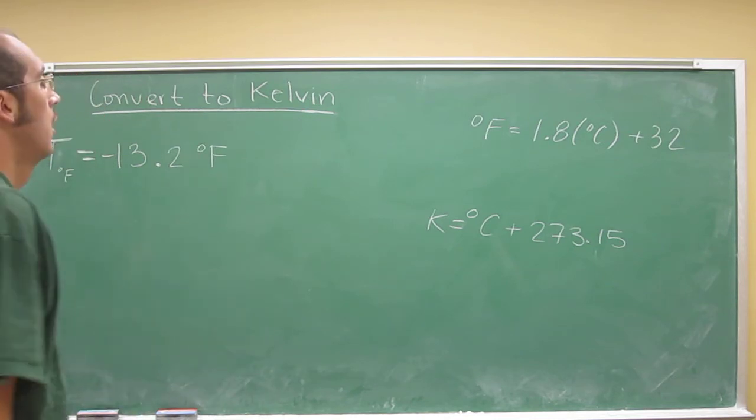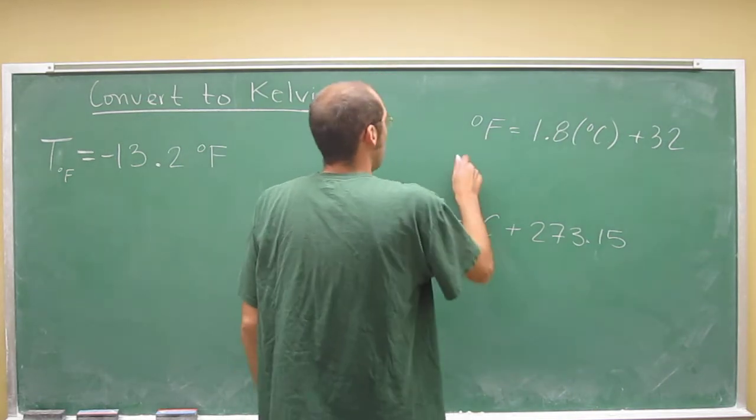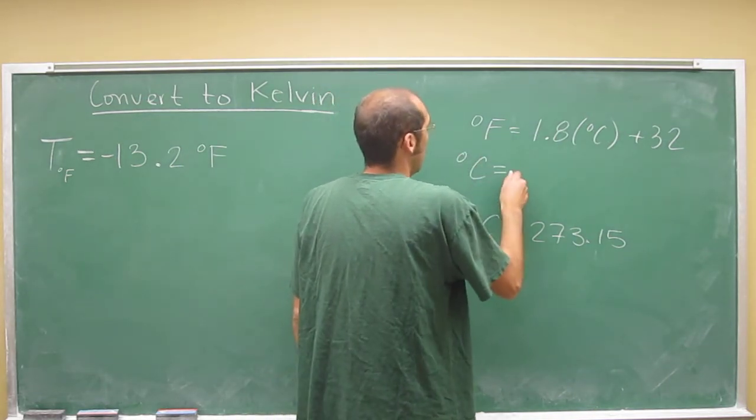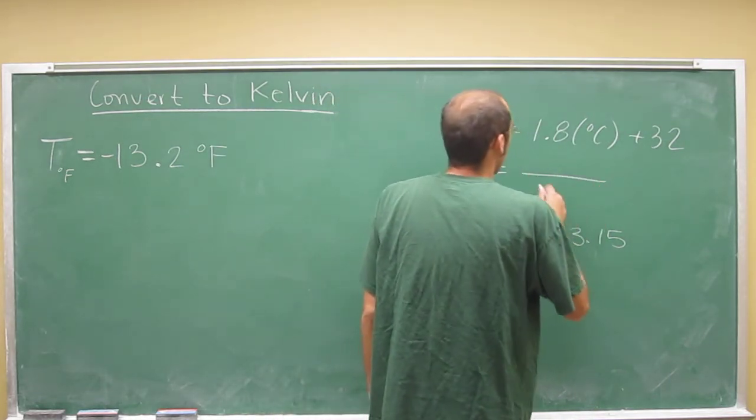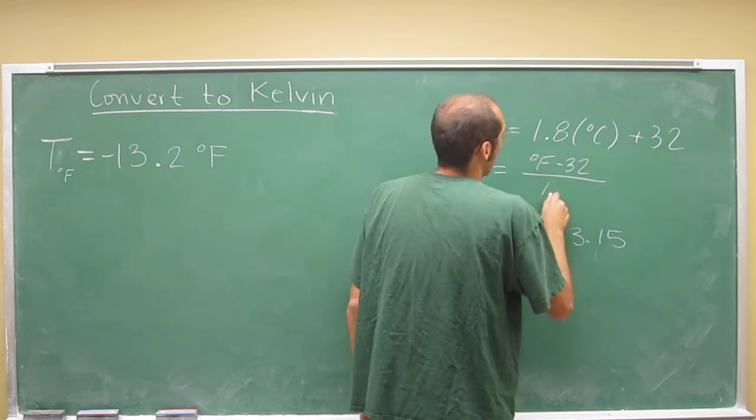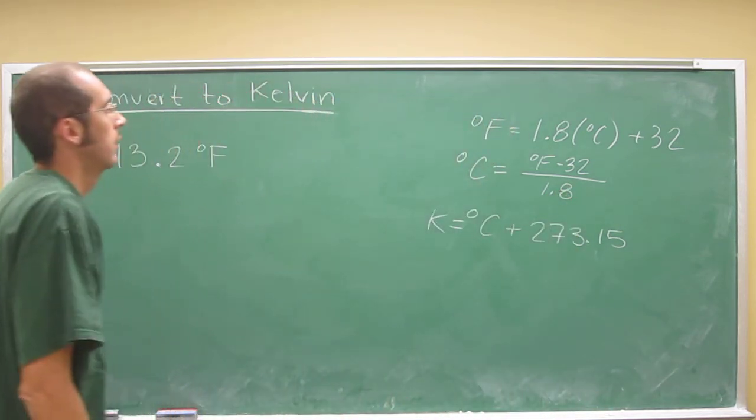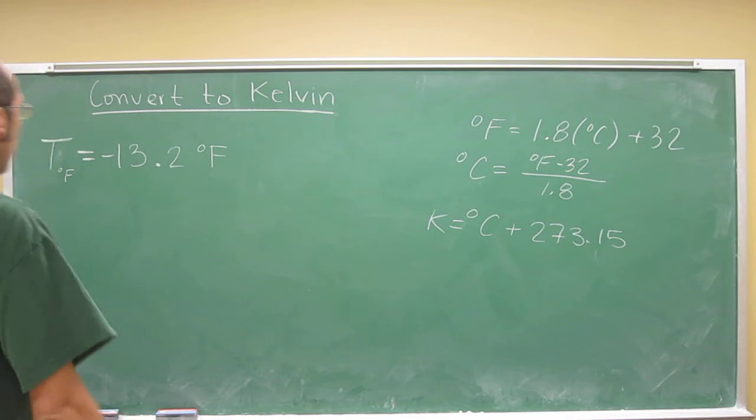So recalling that, you're going to have to manipulate this equation to get this formula: °C = (°F - 32) / 1.8. OK, so I taught you how to do that before.